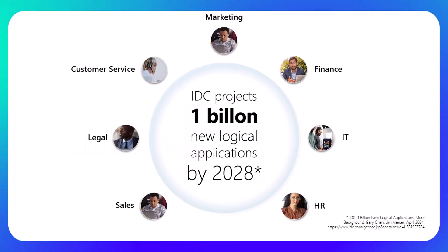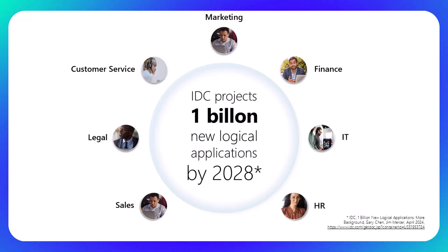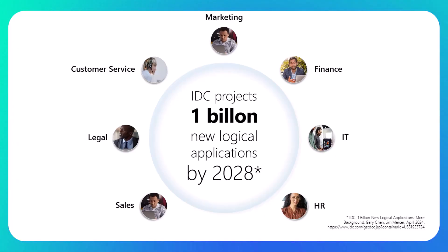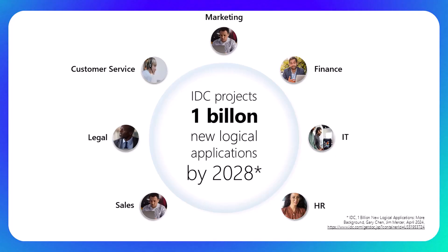The exciting part for all of you is that IDC is projecting 1 billion new logical applications by 2028. Of course, not everyone is going to be a professional developer able to meet that demand. A significant proportion of those are going to be agents in addition to apps and Power Automate flows. Start to think about how you can be the next developer, whether it's a low-code citizen developer or partnering with your pro devs to build at scale across functions like customer service, finance, field service, IT, HR — you name it.